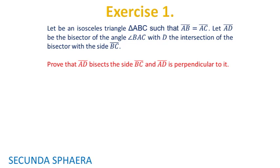For a start we have the first exercise. Let ABC be an isosceles triangle such that the sides AB and AC are equal. Let AD be the bisector of the angle BAC, with D the intersection of the bisector with the side BC. We are asked to prove that AD bisects the side BC and is perpendicular to it.